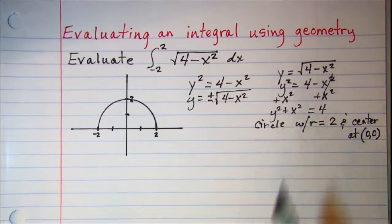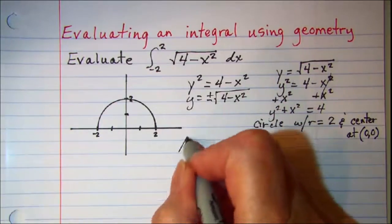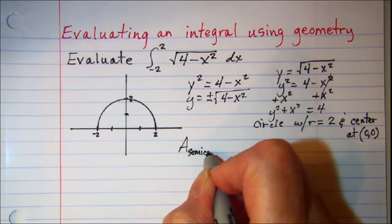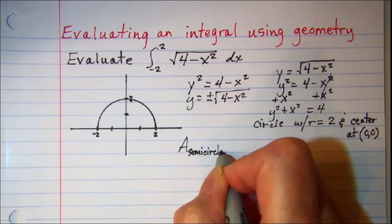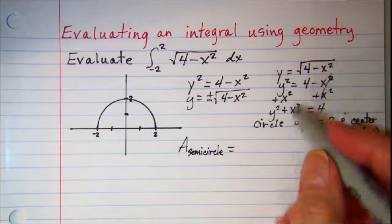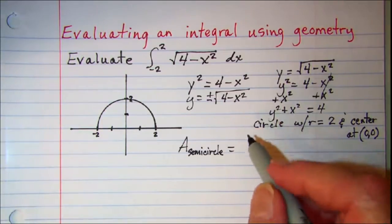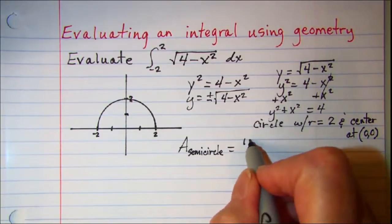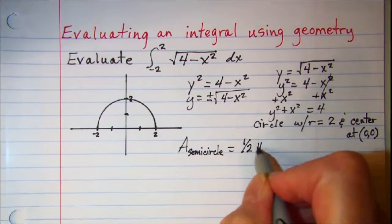So what we're going to do then is find the area of a semicircle. We know that the area of the circle is pi r squared, so our semicircle will be one half pi r squared.